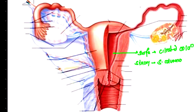These simple columnar cells in the stroma are a bit modified. They help in the formation of endometrial glands.